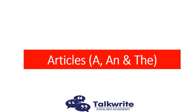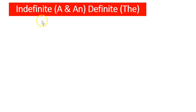Hi friends and welcome to this video on articles. Now articles, as you know, are a, an and the. Many English language learners make a mistake with articles and it is very important to use them correctly. The first thing to remember is that a and an are called indefinite articles, while the is called a definite article.